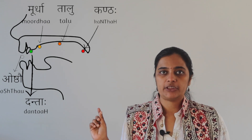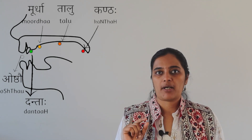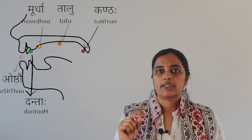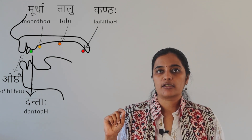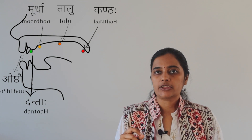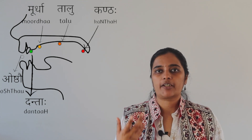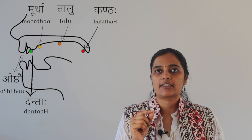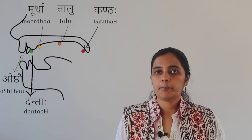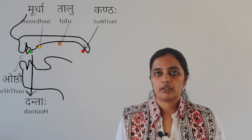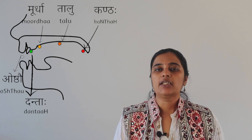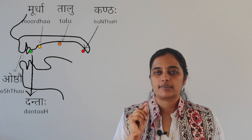Now let us look at the various sthanams. In this picture, the various sthanams are marked in different colored dots. Let us start with the Kanthaha. The red dot shows the sthanam of Kanthaha. In general, when we say Kanthaha, we refer to the throat. But here, in Sanskrit grammar, Kanthaha refers to the place where there is this small tongue — the uvula region.